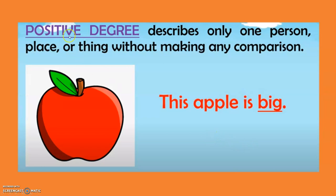Now let us start with the first one — positive degree. When I say positive degree, what does it do? It describes only one person or thing without making any comparison. For example: this apple is big. Now, which is the word describing the apple? The word big. So it is positive degree.